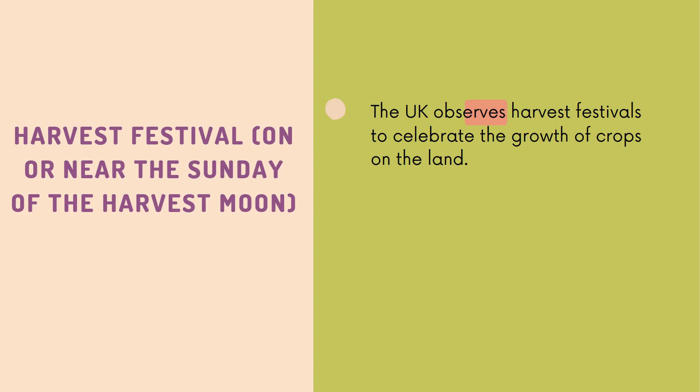The Harvest Festival is celebrated on or near the Sunday of the Harvest Moon. Like many other places in the world, the UK observes harvest festivals to celebrate the growth of crops on the land. The festival is also about giving thanks for all the good and positive things in people's lives, such as family and friendships.